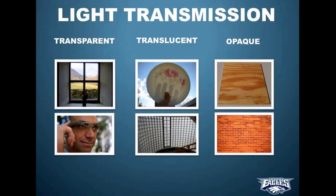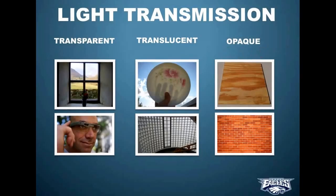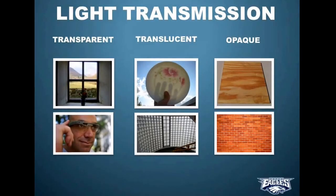Such as in a bathroom or something where there will be a privacy window that allows light to come in, but you can't actually see through it. And then opaque materials are materials that just block light all together. 0% light transmission. So transparent materials, 100% light transmission. Translucent materials are anywhere between 1% and 99% light transmission. And then opaque materials, 0% light transmission.